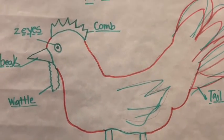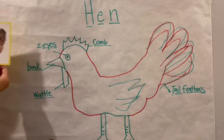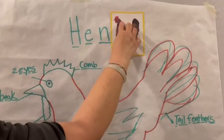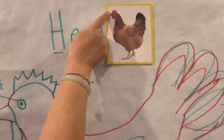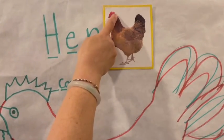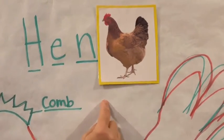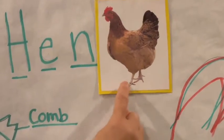And friends, I'm gonna share some pictures with you. And this is what our hen looks like. So you'll see the comb, the beak, the eyes, the waddle, all of its feathers, and its two feet.